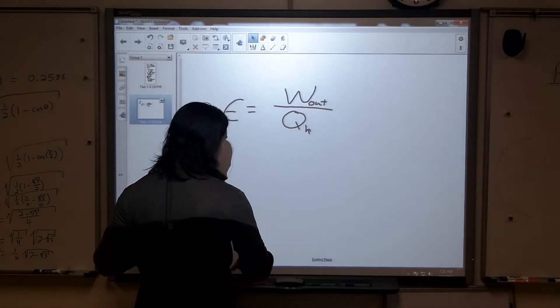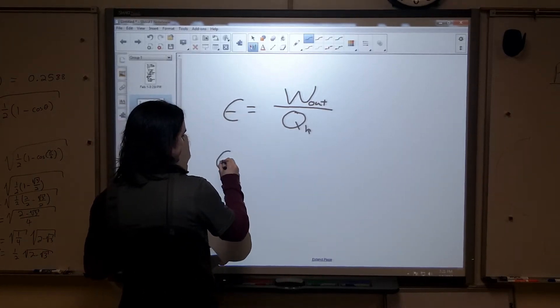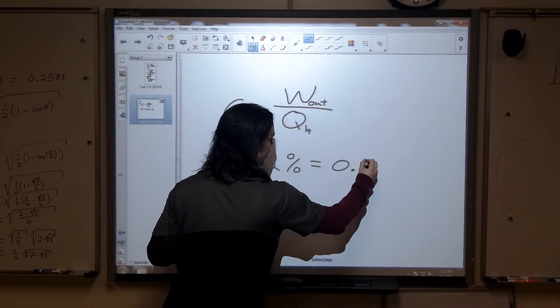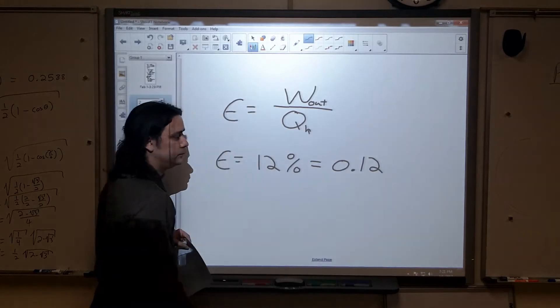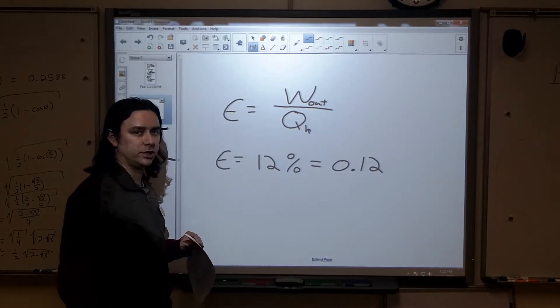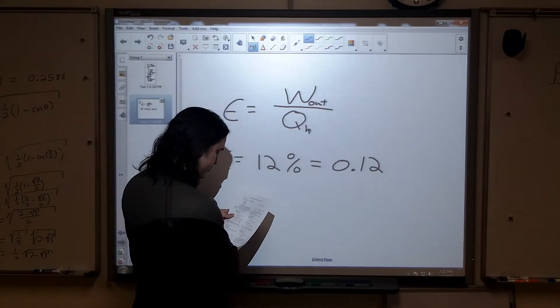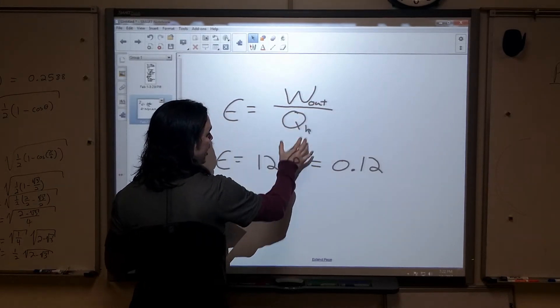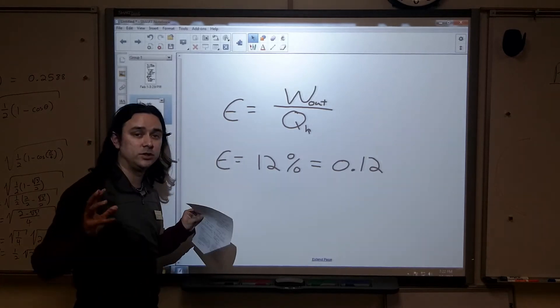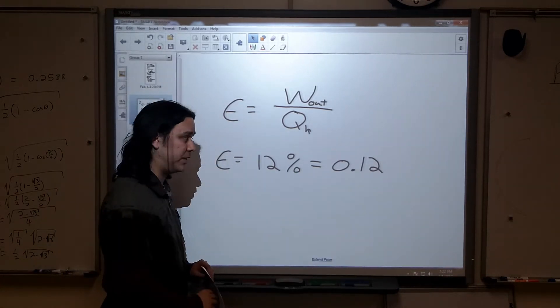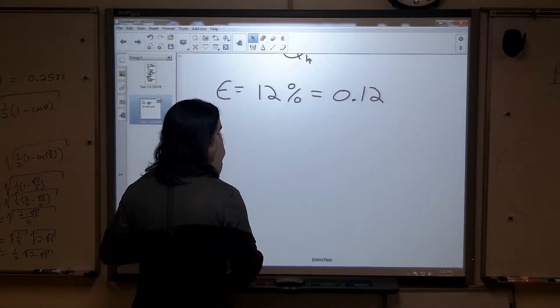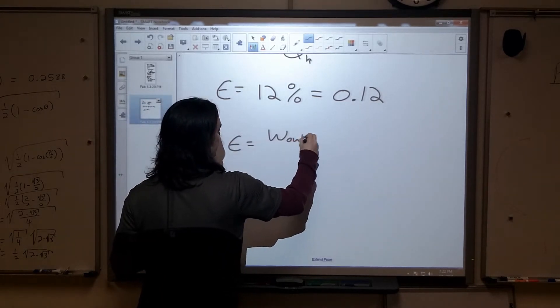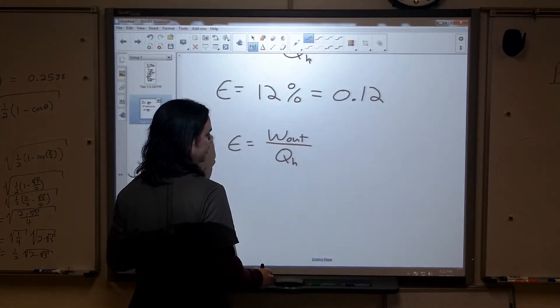All right, they tell us that our efficiency is equal to 12%, which is equal to 0.12. This is how percentages work. All right, and since we know that the efficiency is defined as the amount of work out divided by the amount of heat energy that we give the engine, we can now set this up. So if the efficiency equals the work out divided by the heat put in,